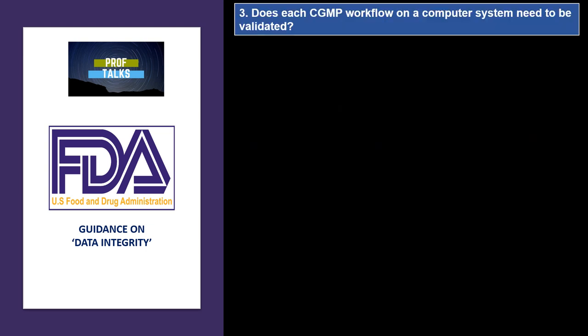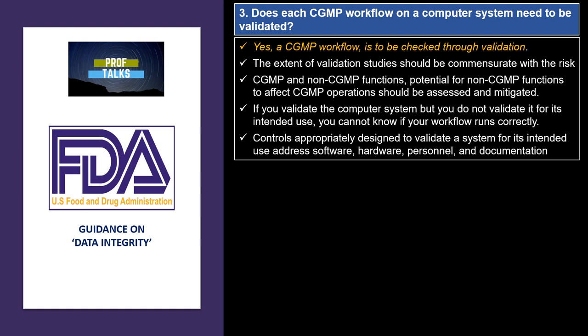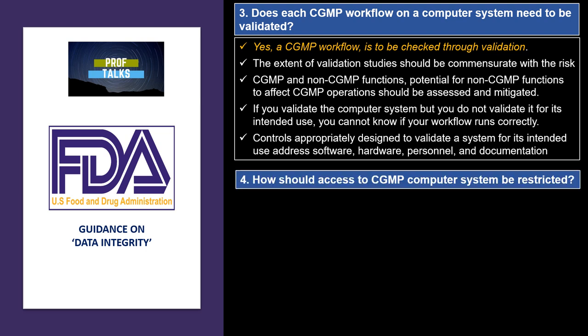The next question is: does each CGMP workflow on a computer system need to be validated? The answer is yes — if the workflow is a CGMP workflow, it needs to be validated. However, the extent of validation is commensurate with the level of risk. There should be consideration of CGMP and non-CGMP functions and the impact of non-CGMP functions on CGMP functions. Validation activities should be carried out for the intended use of the system so the workflow can be run correctly. Controls appropriately designed to validate a system for its intended use address software, hardware, personnel, and documentation.